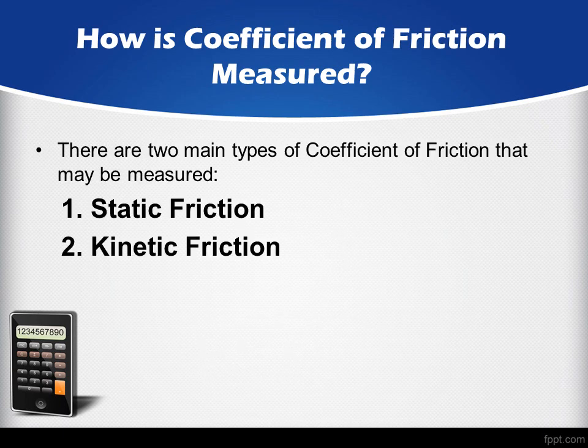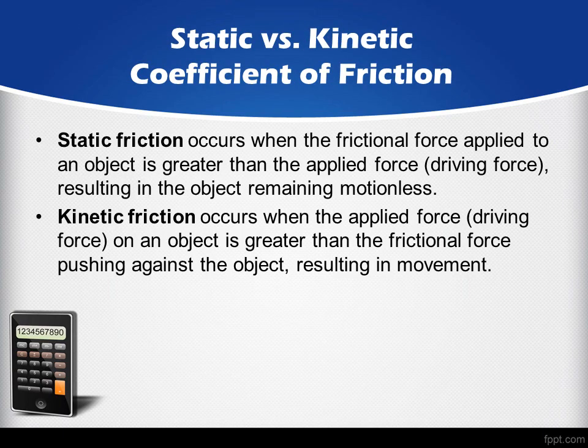There are two main types of Coefficient of Friction: Static Friction and Kinetic Friction. Static Friction occurs when the frictional force applied to an object is greater than the applied force. Kinetic Friction occurs when the applied force on an object is greater than the frictional force pushing against the object.